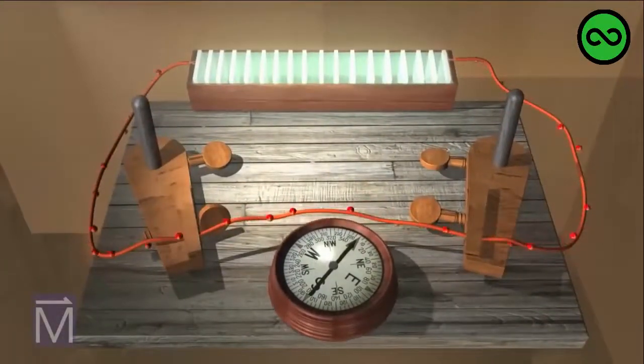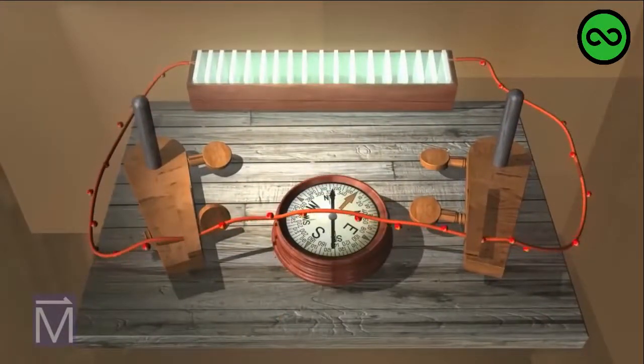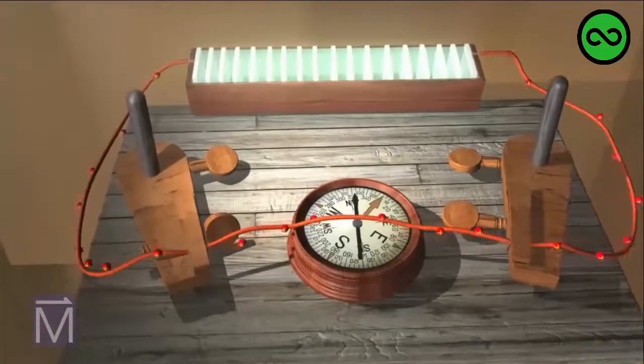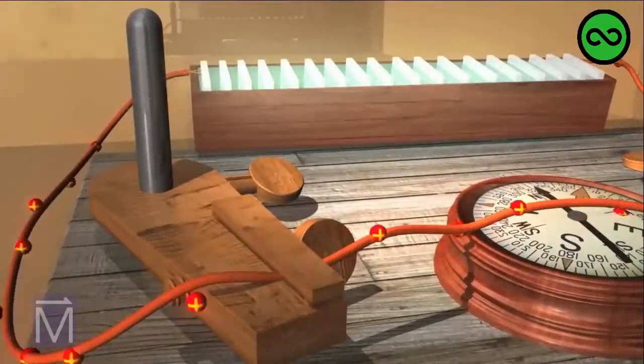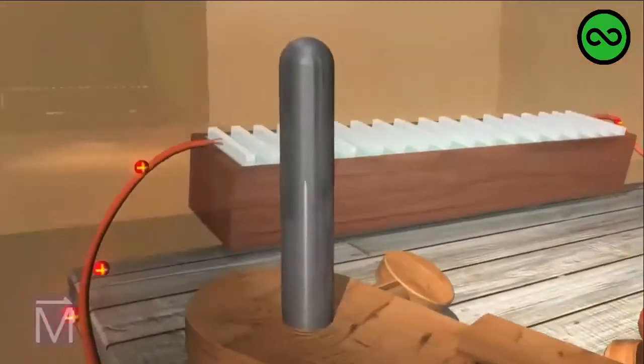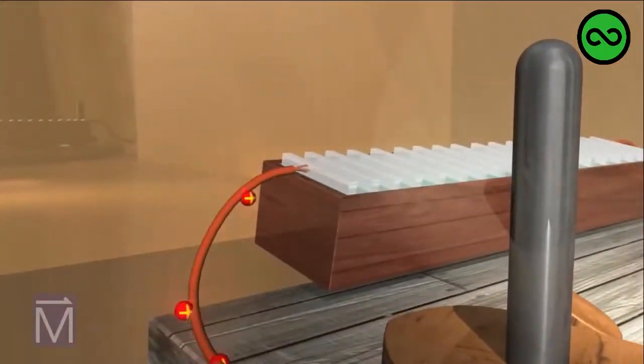Ørsted happened to place the compass near his battery and was startled to notice that the compass needle moved. Ørsted deduced this happened because the wire produced a magnetic field around it when it carried a current.